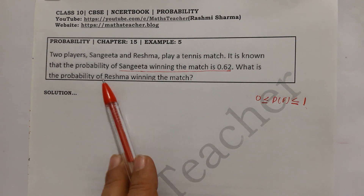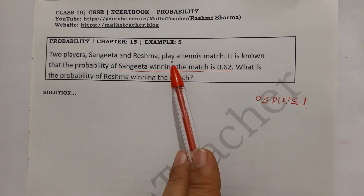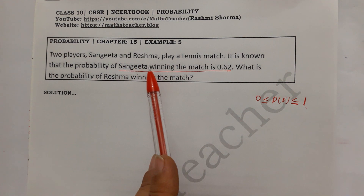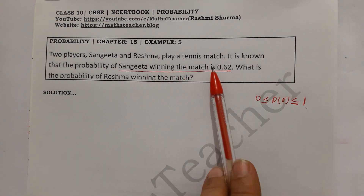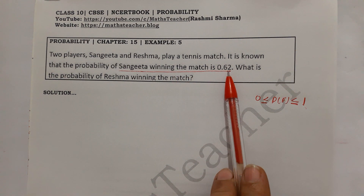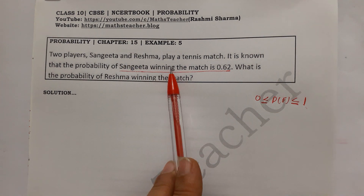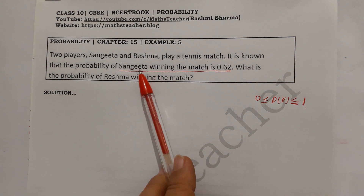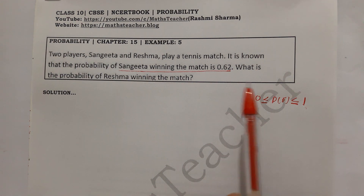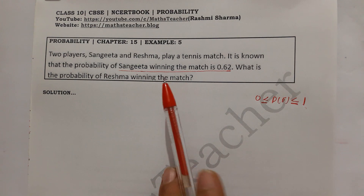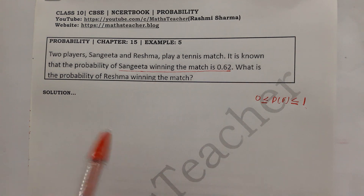The probability of Sangita winning the match is 0.62. Now what we need to find is: what is the probability of Rashma winning the match? Since Sangita's winning probability is 0.62, we can use that to find Rashma's probability.